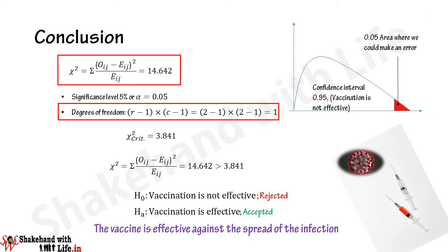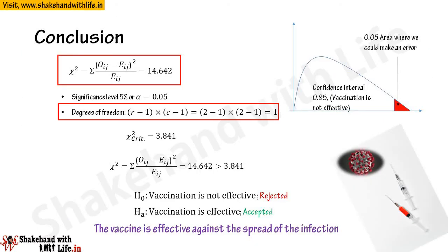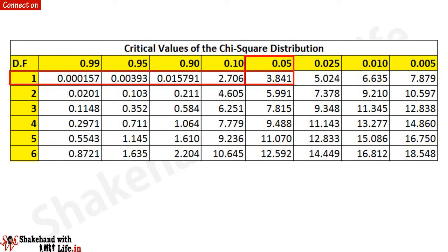The degrees of freedom equal the number of rows minus 1 multiplied by the number of columns minus 1. Here the number of rows is 2 and the number of columns is 2. Hence, degrees of freedom equals (2 minus 1) times (2 minus 1), which equals 1. Referring to the chi-square distribution table under 0.05 with 1 degree of freedom, the critical value is 3.841.